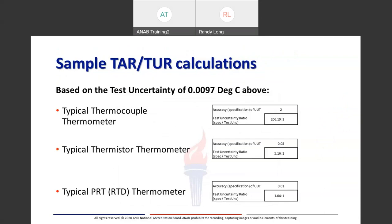If I take this same uncertainty and replace resolution with a thermocouple type thermometer device, you can see that the uncertainty best-case scenario goes up to 0.06 degrees C. Looking at test accuracy ratios: considering a test uncertainty of 0.0097, a typical thermocouple thermometer with an accuracy of plus or minus 2 degrees gives a test uncertainty ratio of over 206-to-1. A different device — a digital thermometer with an accuracy specification of 0.05 — gives a test uncertainty ratio of 5.16-to-1. And for a higher-end sensor like an RTD or PRT with an accuracy of 0.01, we've got about a 1-to-1 test uncertainty ratio.